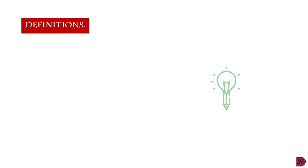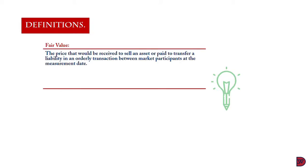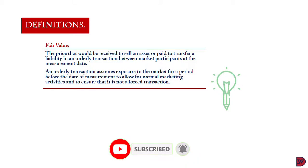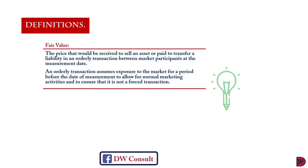Let's look at some definitions. Starting with fair value: the fair value is the price that will be received to sell an asset or paid to transfer a liability in an orderly transaction between market participants at the measurement date. This explanation tells us that the fair value is the exit price. An orderly transaction is one that assumes exposure to the market for a period before the date of measurement to allow for normal marketing activities — that is, buying, selling, and negotiation — to take place and to ensure that it is not a forced transaction.